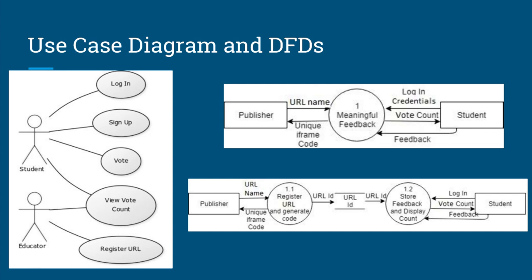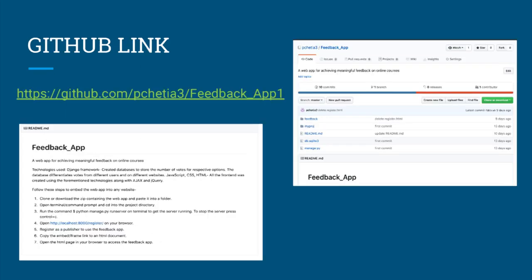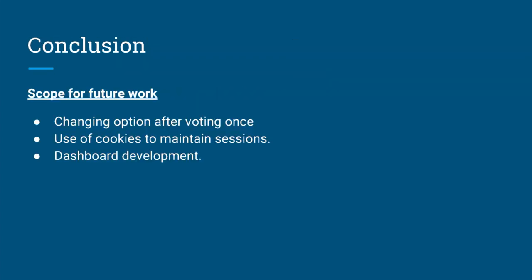Below that is the level 1 DFD, where the meaningful feedback process is divided into two parts. There is one part for the publisher where a publisher can register a URL and an iframe code is generated, and the URL ID is stored in the database. When a student wants to give feedback, the application fetches the URL ID from the database and the corresponding feedback is stored. This is also the GitHub link for our application.